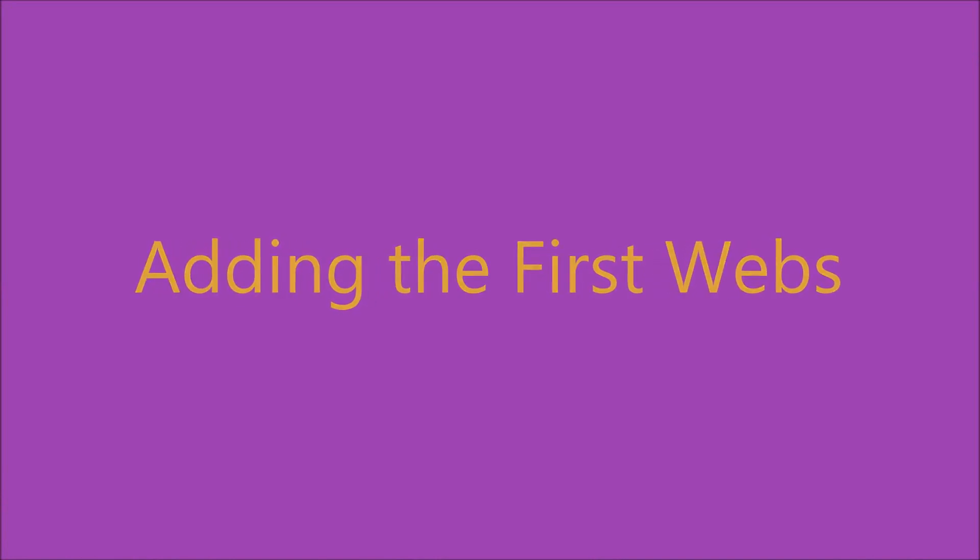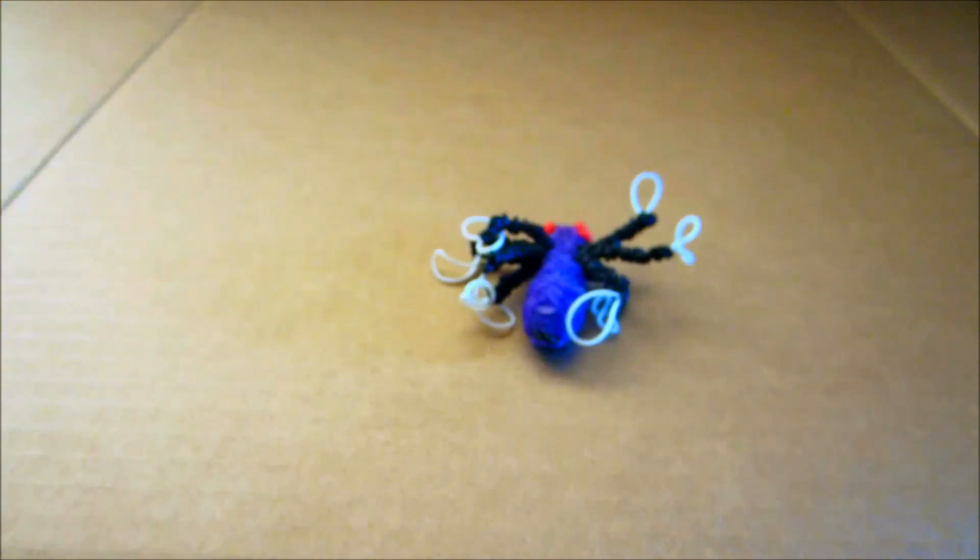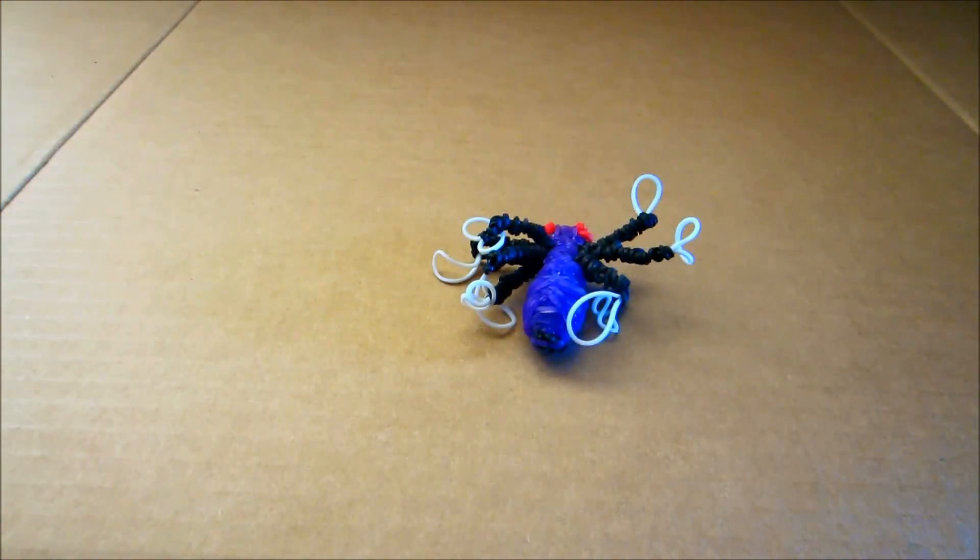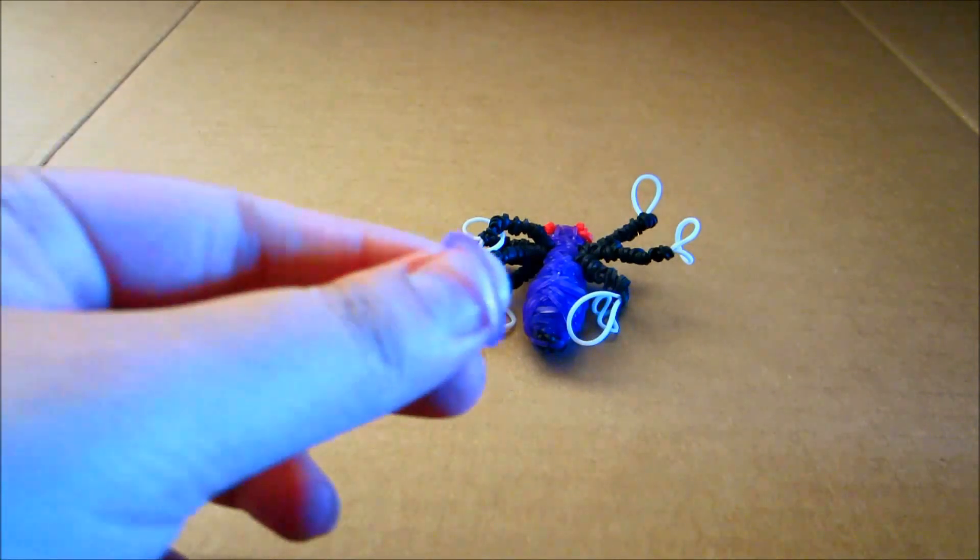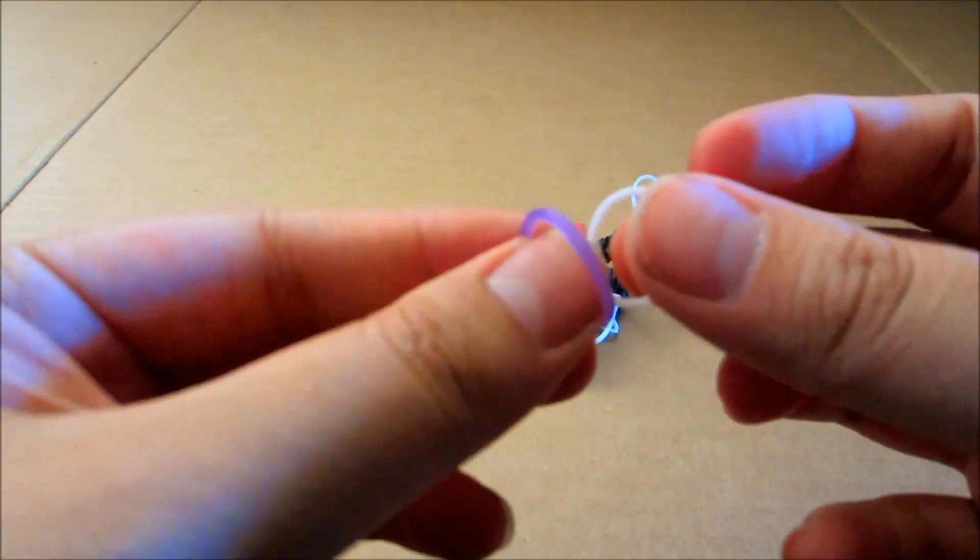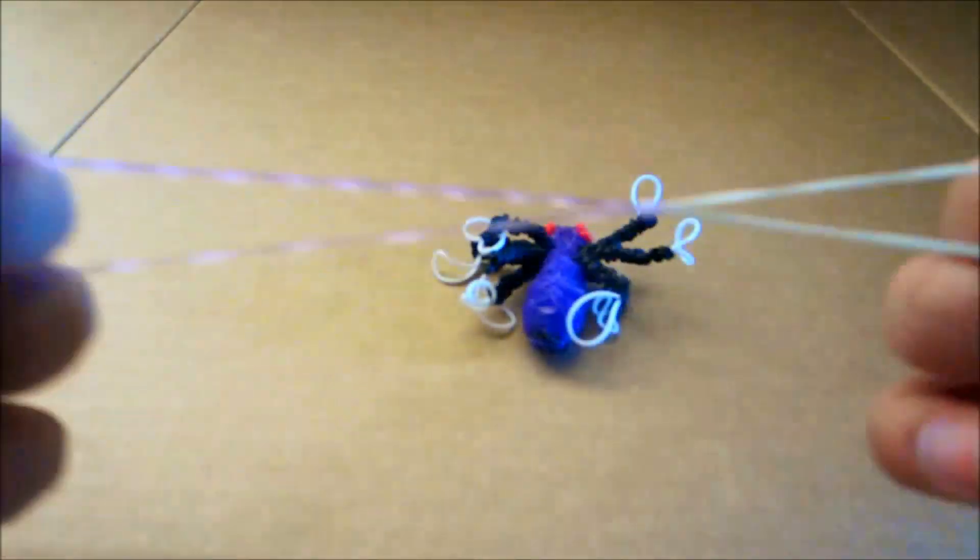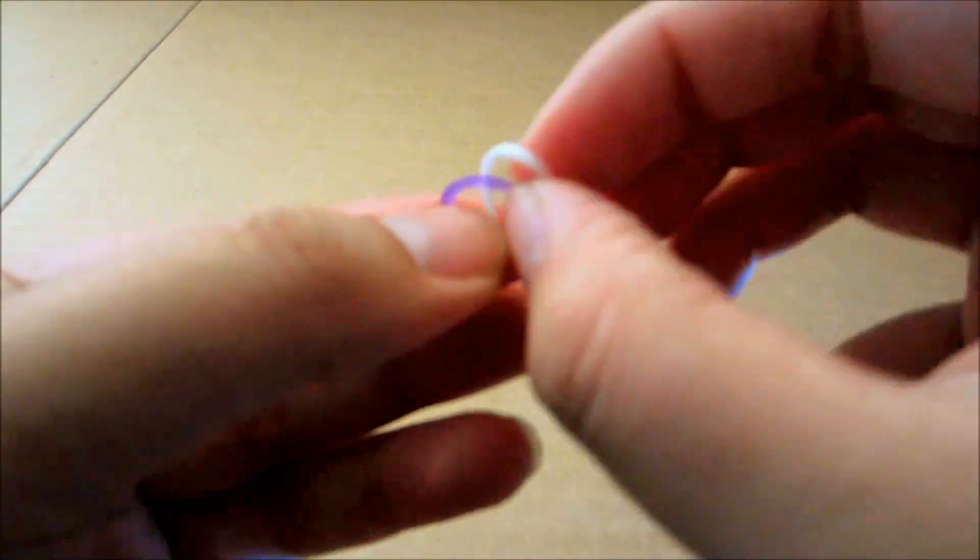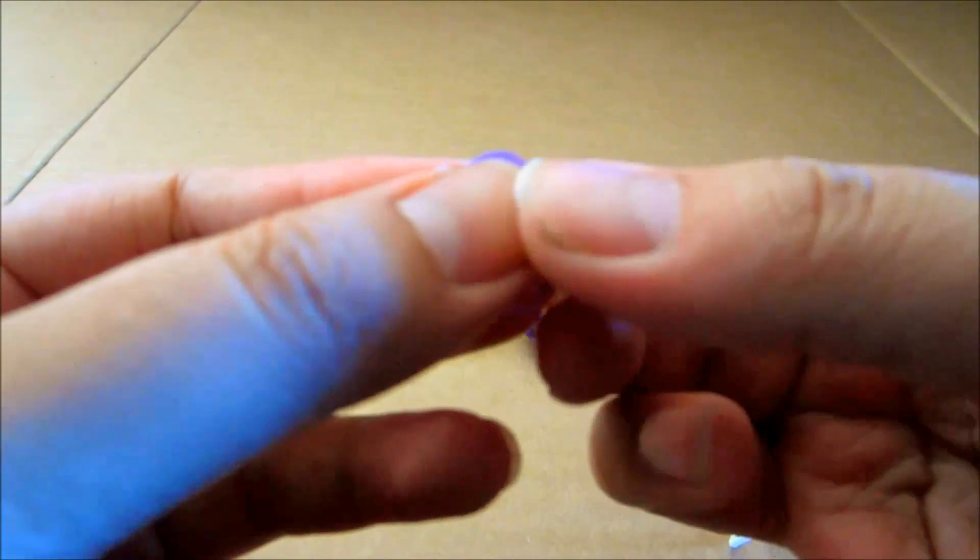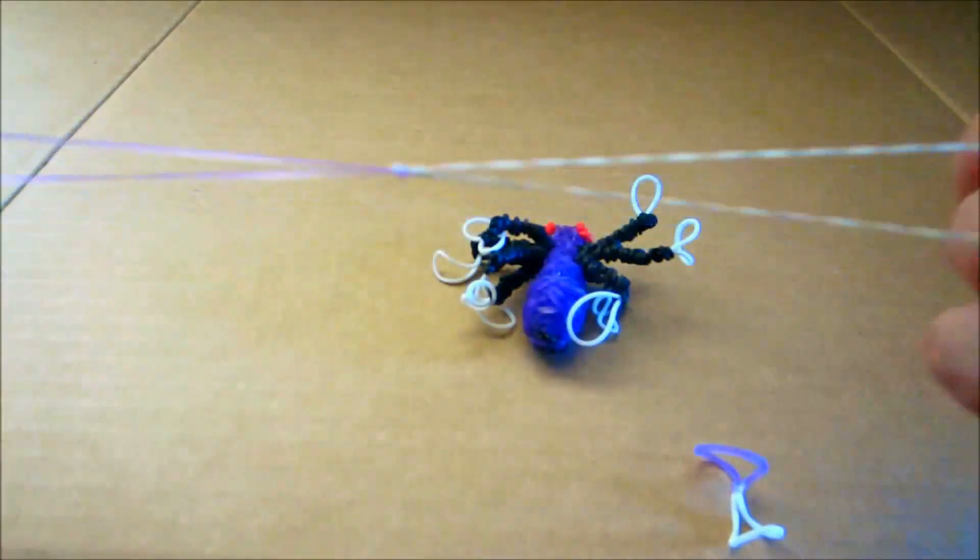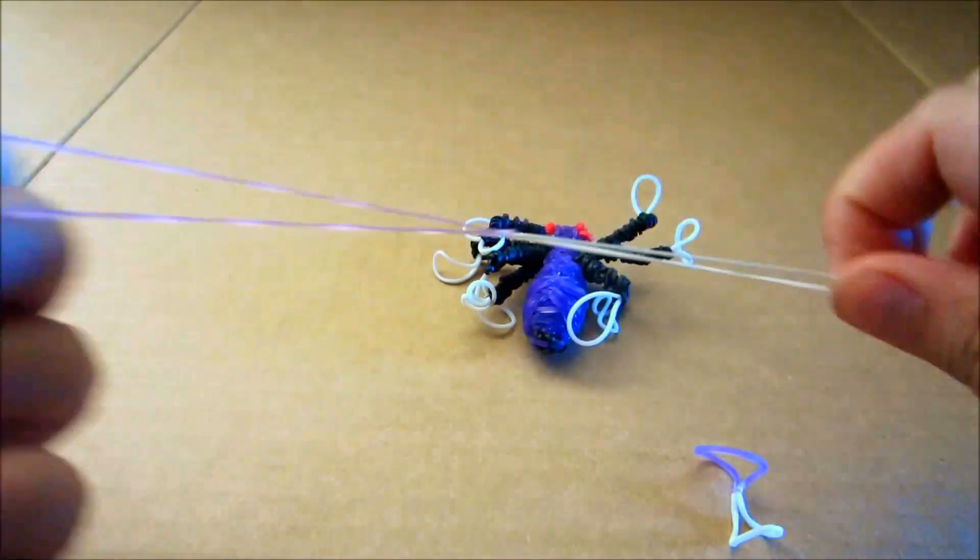Next we're going to do two small skeletons. It's going to be a pair of white and purple, just like that. It's going to be a small skeleton, so we need two of those.